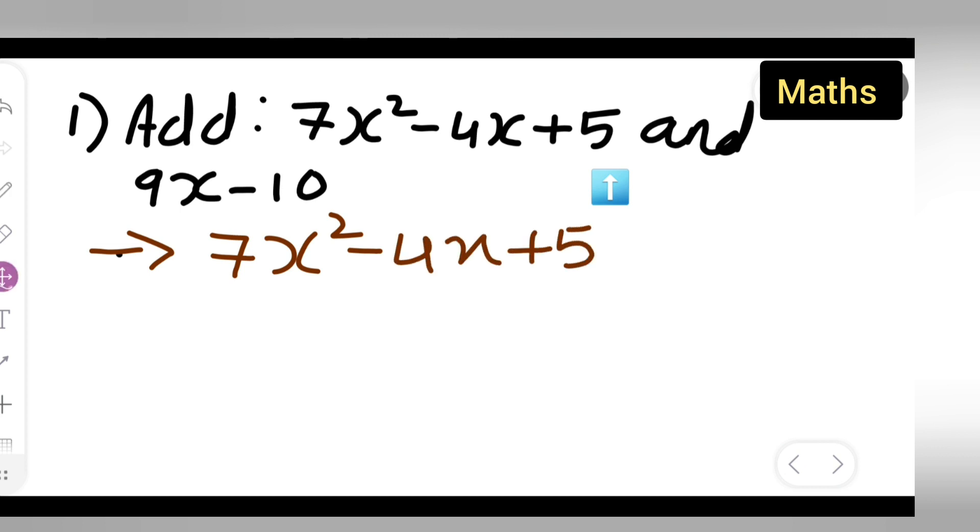Now this is a single term, constant term. So minus 10 will come here, write down minus 10 over here. After that, there is a single x, 9x only x variable term, so plus 9x will come over here.